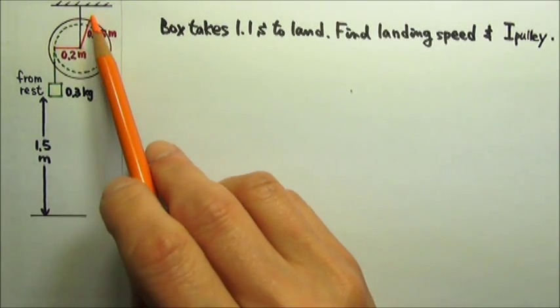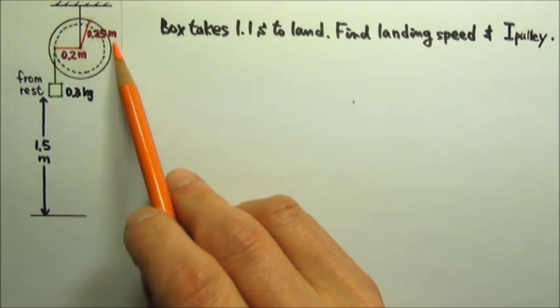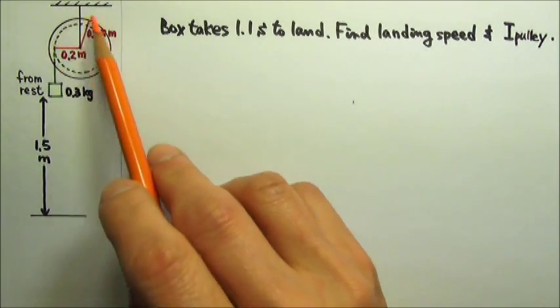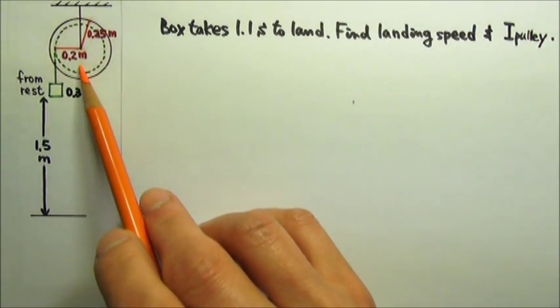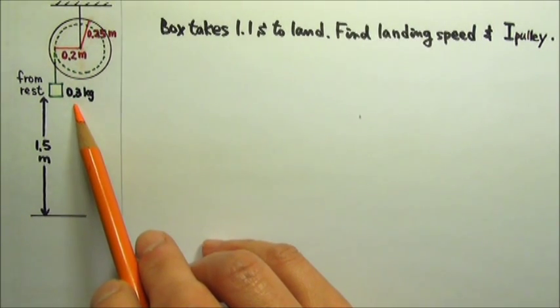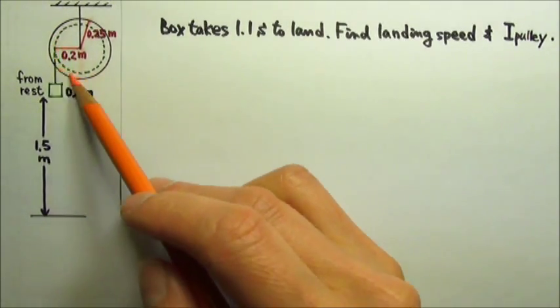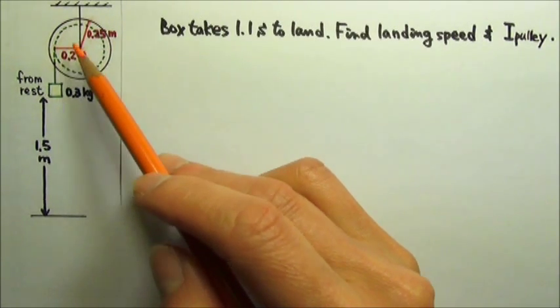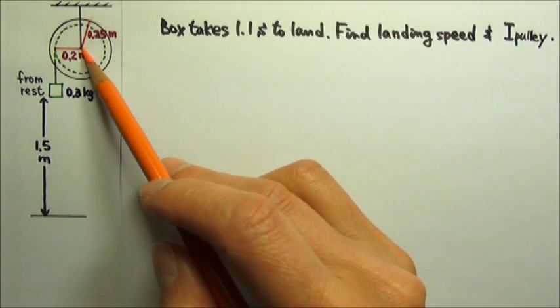This large pulley has an outer radius of 0.25 meters. A string wrapping around the part with 0.2 meter radius is attached to a 0.3 kg hanging box. The string does not slip on the pulley, and the friction at the pulley's axle is negligible.